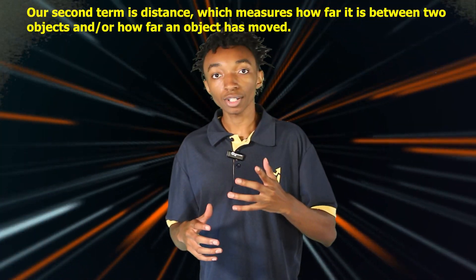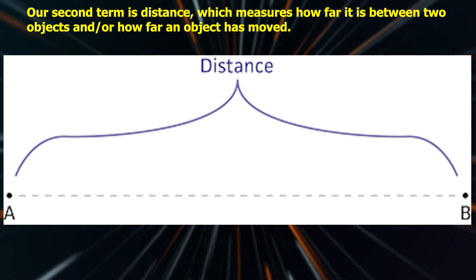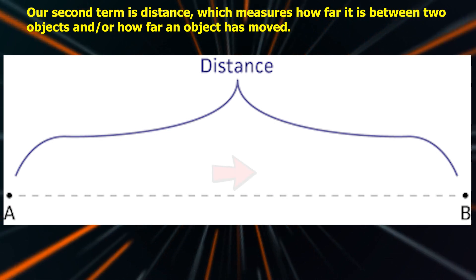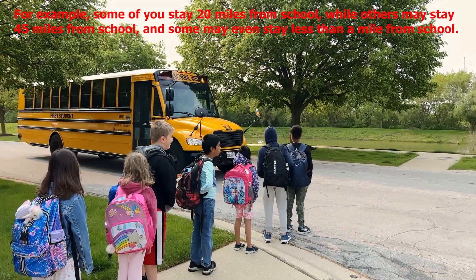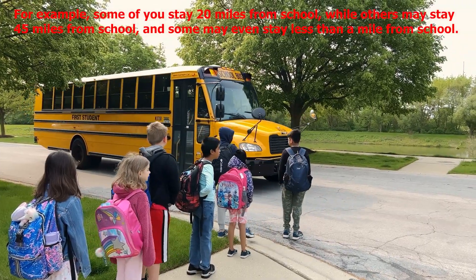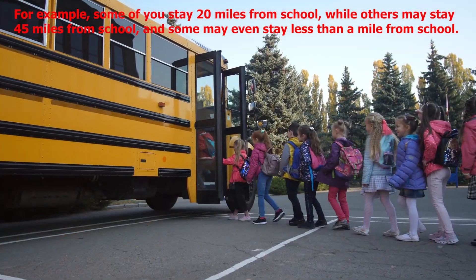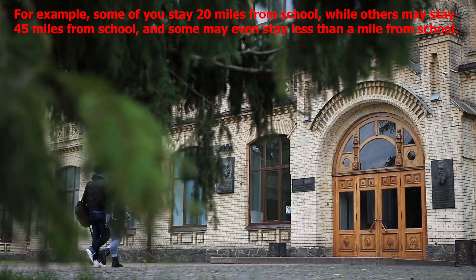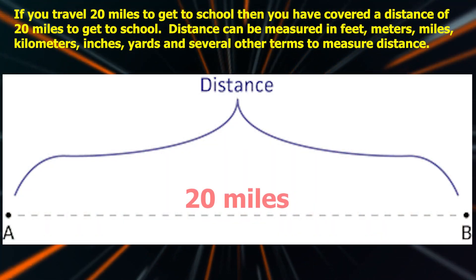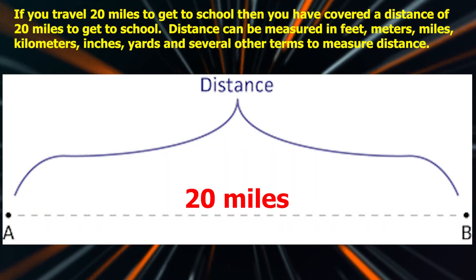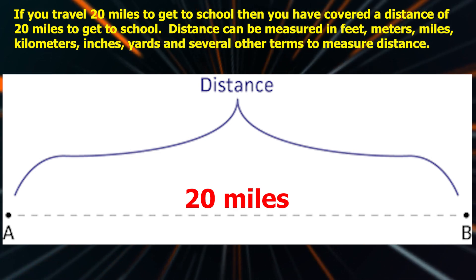Our second term is distance, which measures how far it is between two objects and/or how far an object has moved. For example, some of you stay 20 miles from school, while others stay 45 miles from school, and some may even stay less than a mile from school. So if you travel 20 miles to get to school, then you have covered a distance of 20 miles.